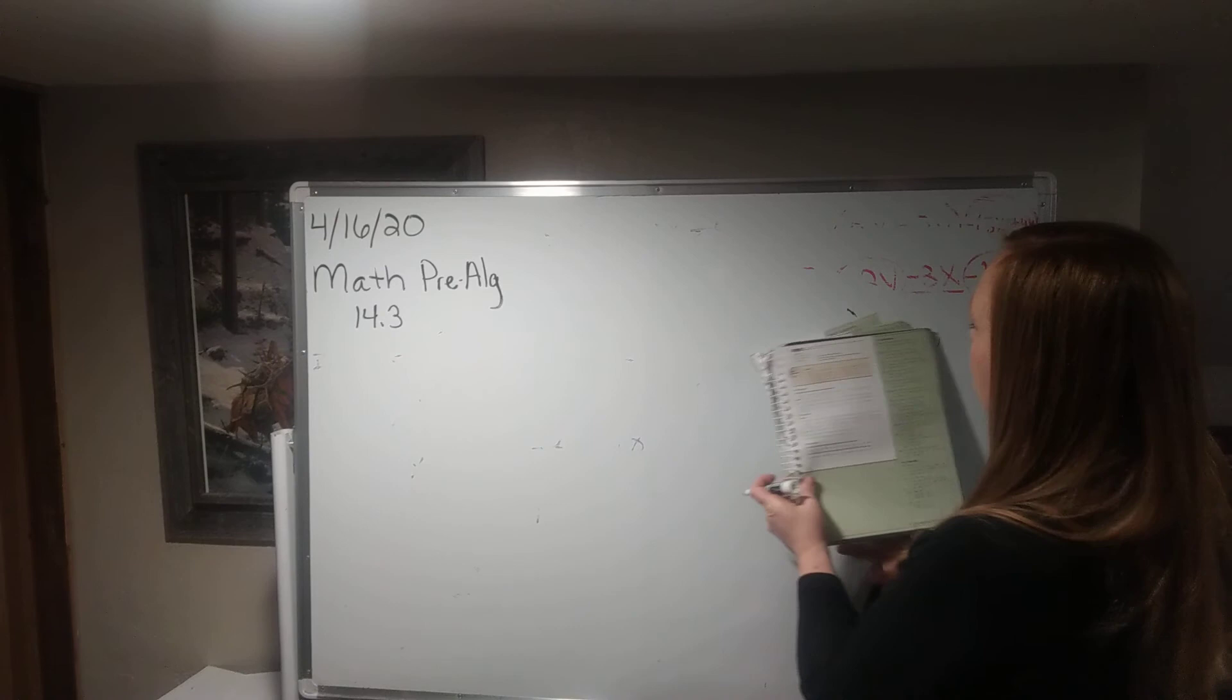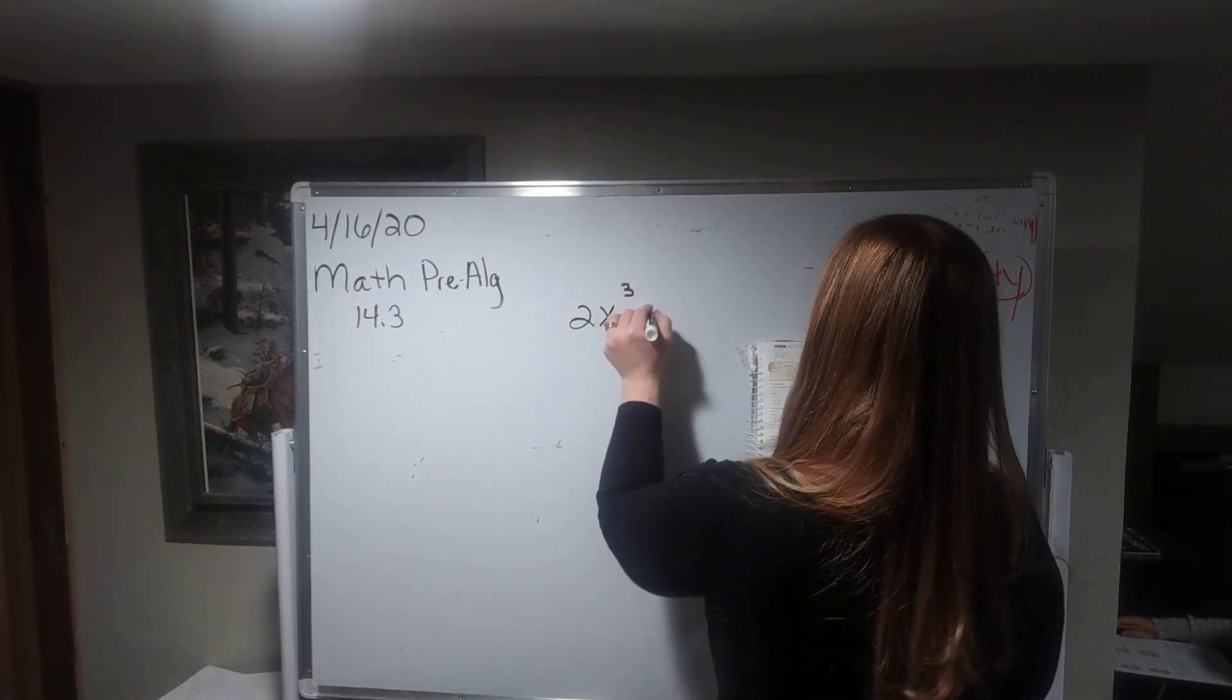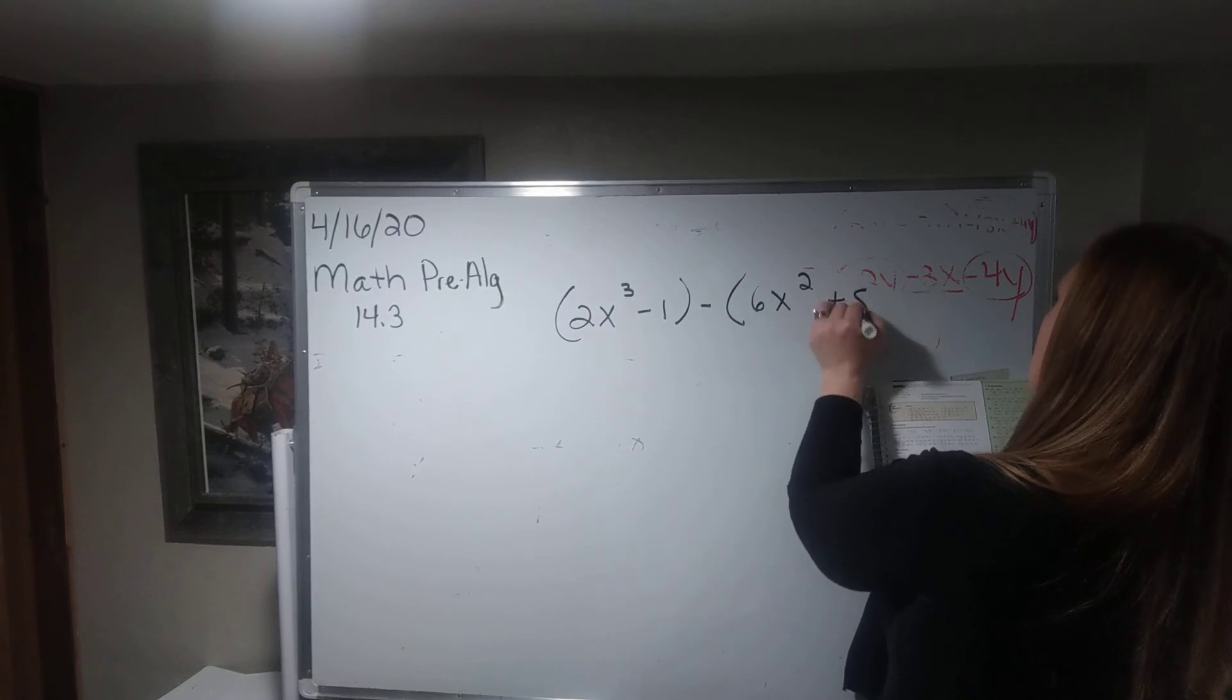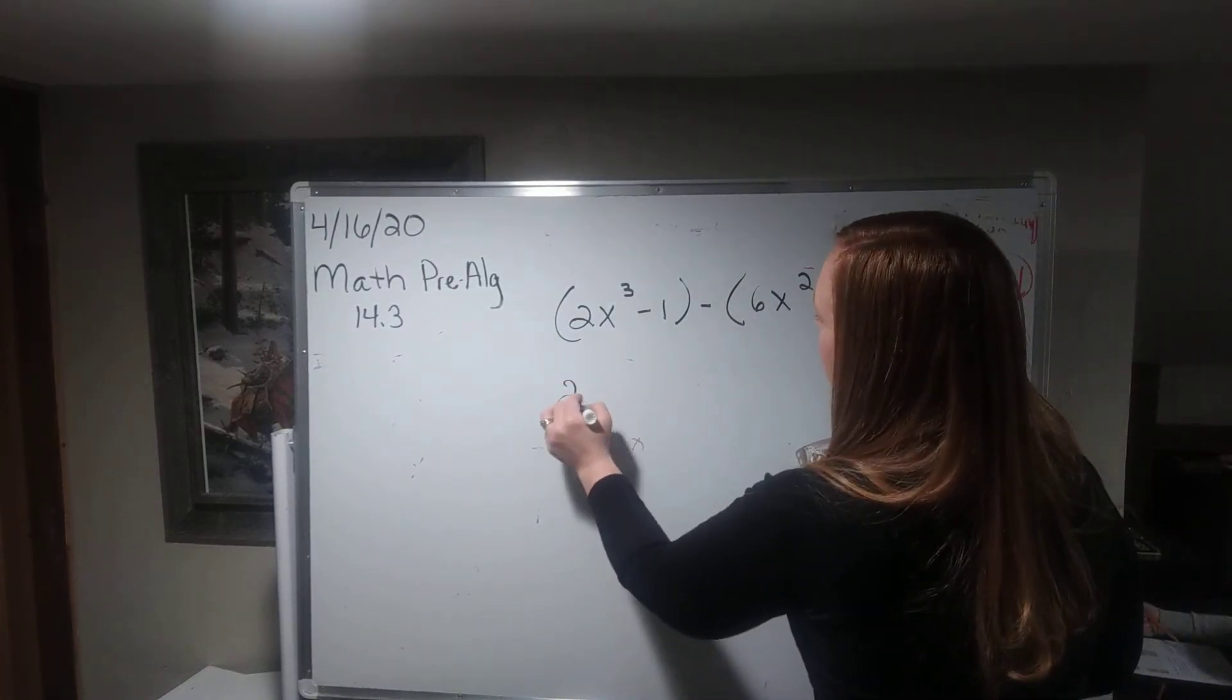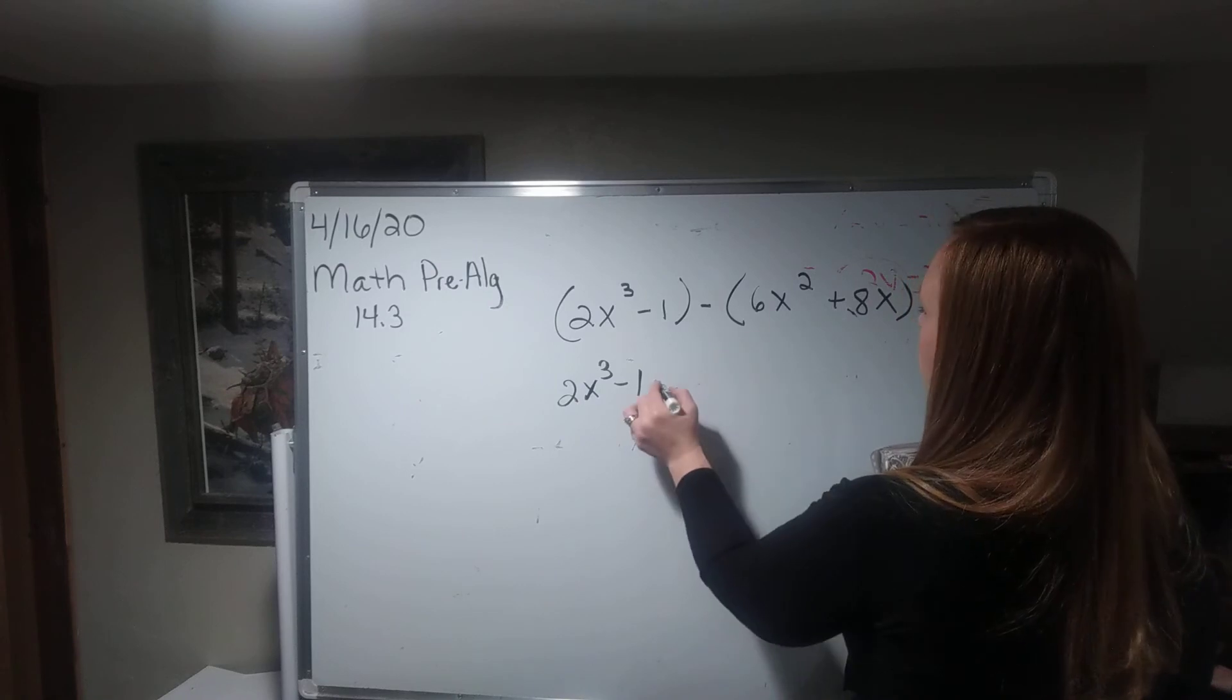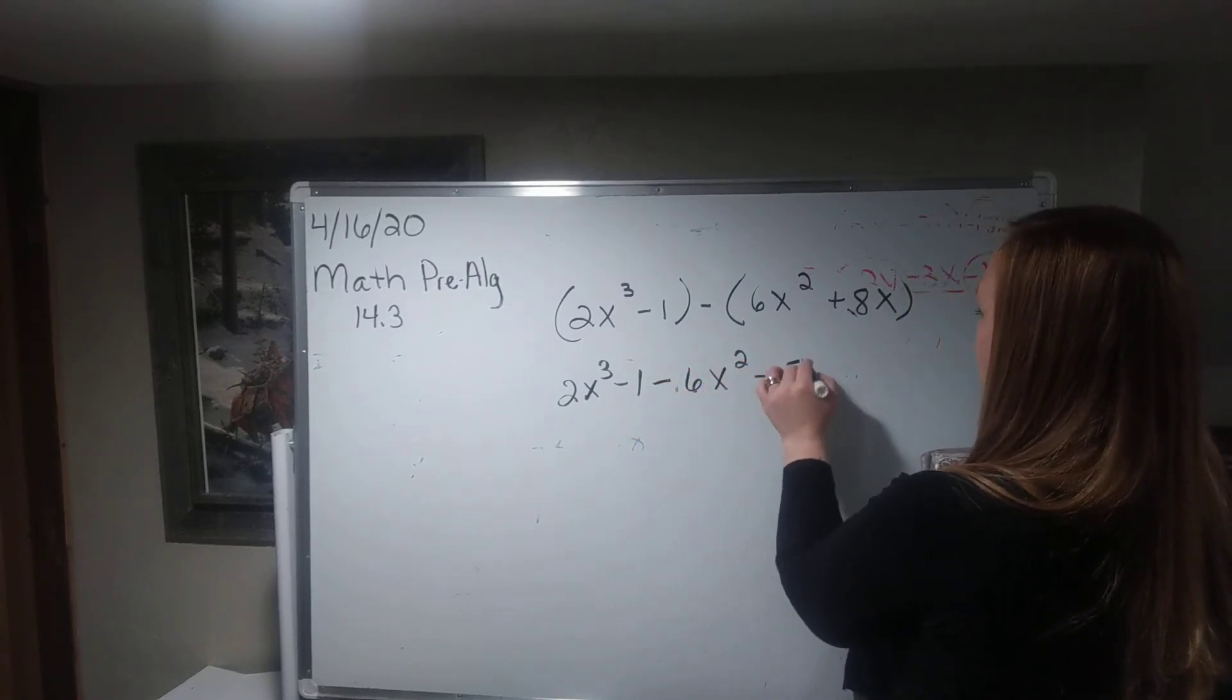Example 6. 2x cubed minus 1 minus 6x squared plus 8x. Okay. So I'm going to go ahead and take this one out. And then change the signs minus 6x squared minus 8x.